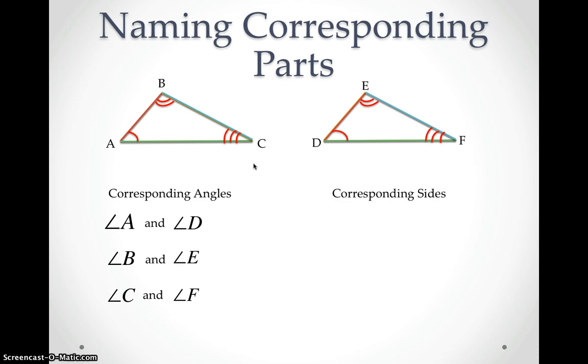Now, if we want to look at corresponding sides, we're going to do the same thing. Line AB and line DE are corresponding sides. We're going to use the same idea when we identify that on the figures. We're going to use this little tick mark. Line BC and line EF are corresponding sides. And line AC and line DF are corresponding sides.